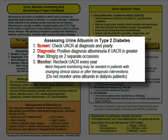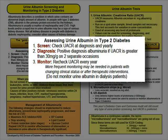Once diagnosed, monitor CKD by checking the UACR and eGFR at least once a year. Check them more often if they are rising rapidly after implementing interventions and in the later stages of CKD.